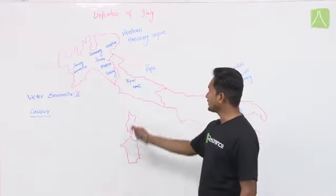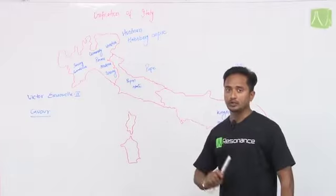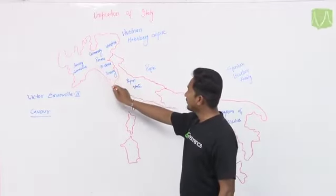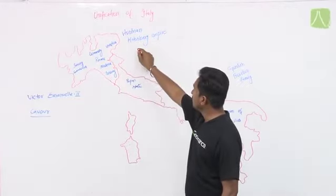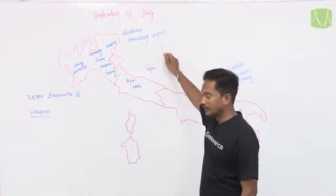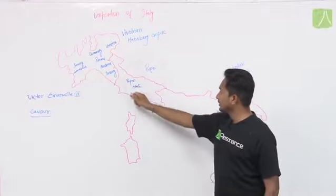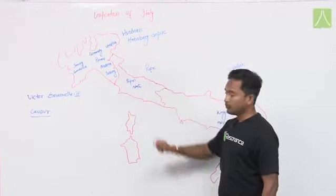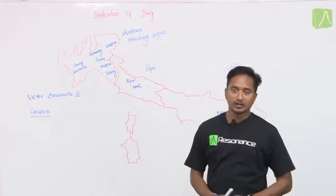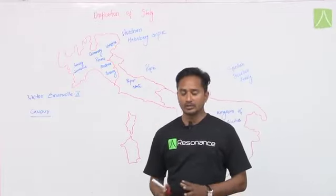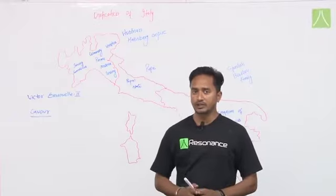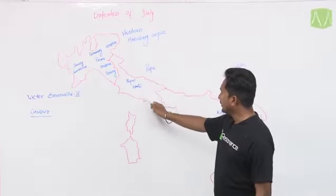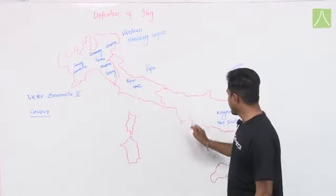Italy was divided into many small pieces. If you look at the northern part of Italy, it belonged to the Austrian Habsburg Empire. If you look at the central part of Italy, that part belonged to the Pope — the highest religious head of Christianity — and that's why this central region is called the Papal State.